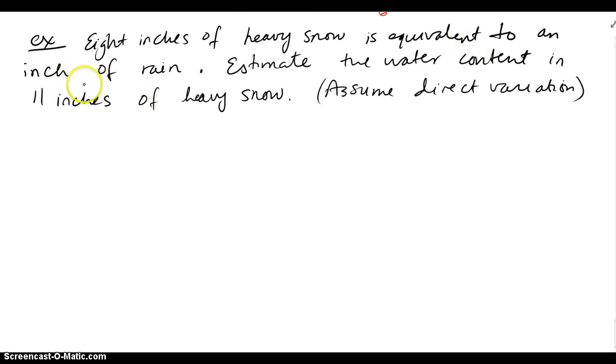Let's look at another example. 8 inches of heavy snow is equivalent to an inch of rain. Estimate the water content in 11 inches of heavy snow. Assume direct variation. So 8 inches of snow is equivalent to 1 inch of rain. I'm going to set up a proportion because direct proportion or direct variation, same idea. 8 inches of snow is equivalent to 1 inch of rain. Now it says estimate the water content in 11 inches of heavy snow. So now I have 11 inches of heavy snow, which I must align with the 8 inches I had. And I'm supposed to estimate the water content or the rain amount. X inches of rain is what we get. So snow to rain, snow to rain. I have my proportion set up.